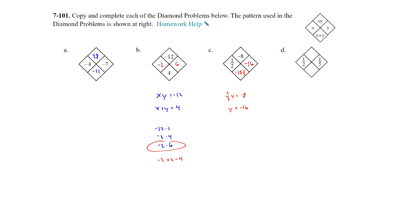For the last diamond, we have x = 1/2 and y = 1/5. The product on top: 1/2 times 1/5 = 1/10. The sum on the bottom: 1/2 plus 1/5. Finding a common denominator of 10: 5/10 plus 2/10 = 7/10. So the bottom of the diamond is 7/10. That's it for this homework section.